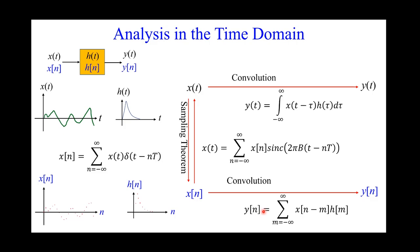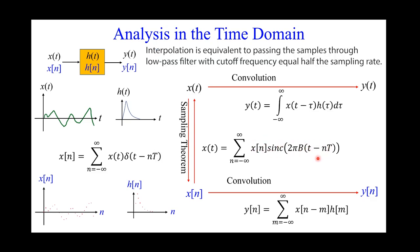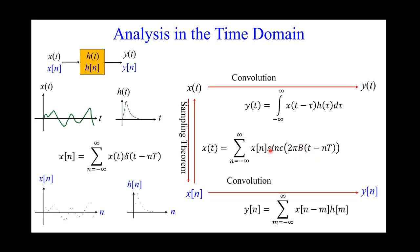That is the relationship between continuous and discrete — the first step being the sampling theorem. After processing x(n) or finding y(n), to get back to the continuous signal, that is interpolation. You multiply x(n) by a sinc function, and summing these gives you exactly the continuous signal without loss, provided you followed the sampling theorem.